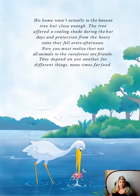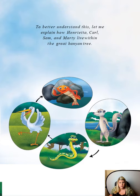Now you must realize that not all animals in the rainforest are friends. They depend on one another for different things — many times for food. To better understand this, let me explain how Henrietta, Carl, Sam, and Marty live within the great banyan tree. Here's Carl, and here's Henrietta. See these arrows? This tells how they're related. You see all of these animals — one, two, three, four — four animals.